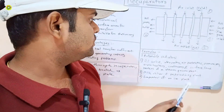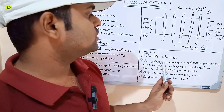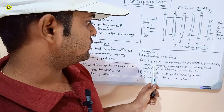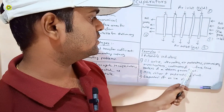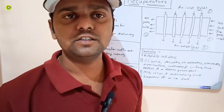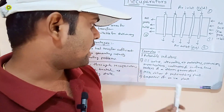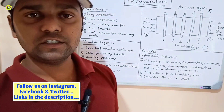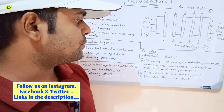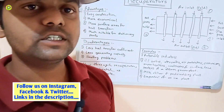In the steam power plant we use oil coolers, air intercoolers, air preheaters, economizers, super heaters, condensers, and surface feed heaters — these are also examples of recuperators. Additionally, the milk chiller of a crystallizing plant and the evaporator of an ice plant are also examples.